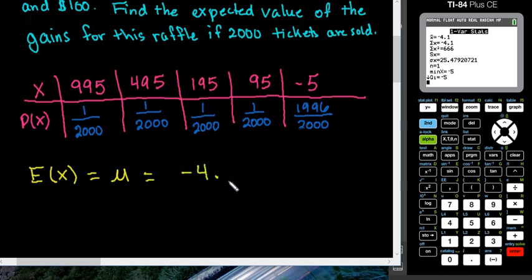And notice that it's a negative 4.1. This means that our expected gains are really going to be a loss. So the expected gain is negative $4.10. So on average, most people are going to lose $4.10 rather than win.